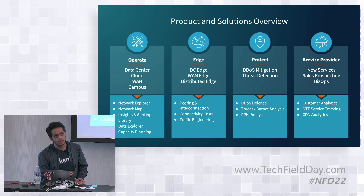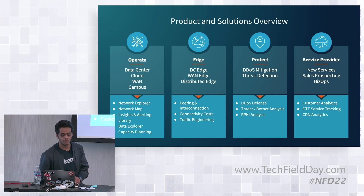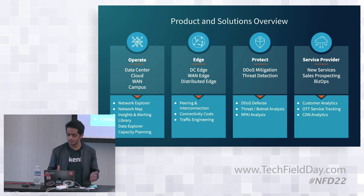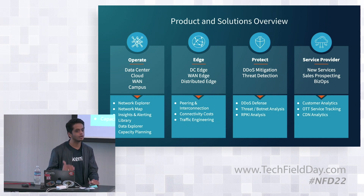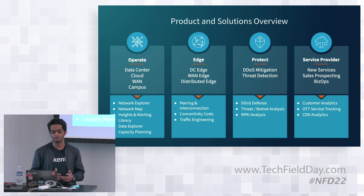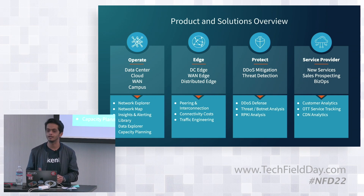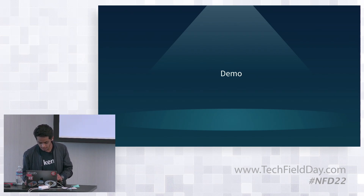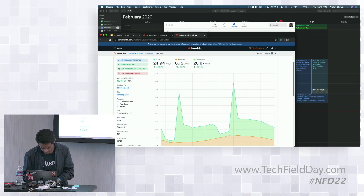The way we approach this is by splitting different users into different modules or personas. In the Operate module, for example, you'd have network operators who care about the total state of the network at a given point in time — what happened in the last three days, including topology maps and top talkers. At the same time, you could have a user focused on the edge of the network who cares about what their peering and interconnect looks like in a different context. We wanted to bring that context into v4. Let me jump onto the UI and show how this plays out.